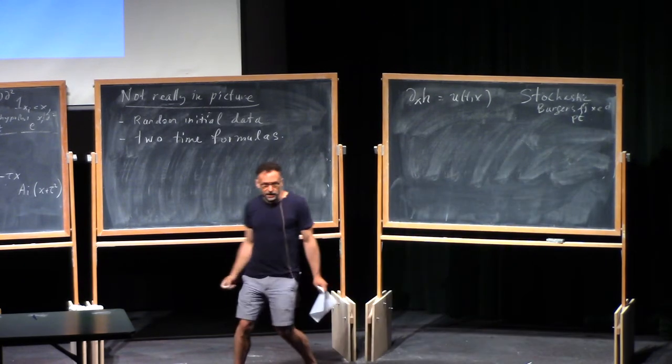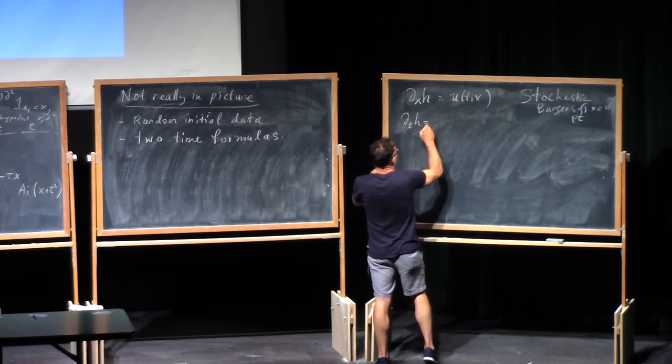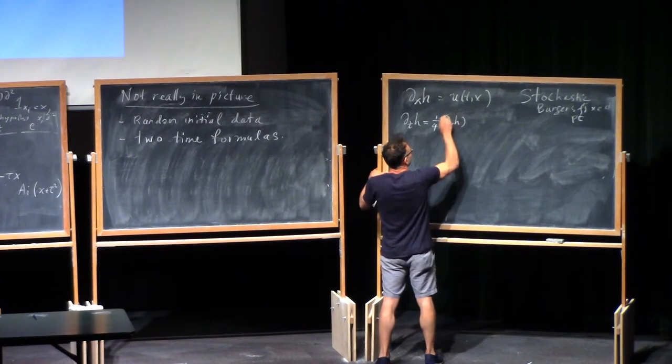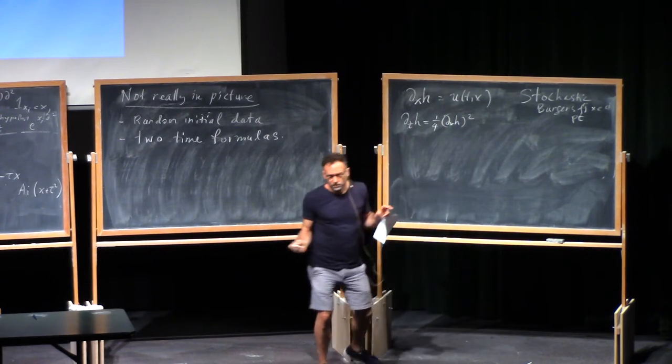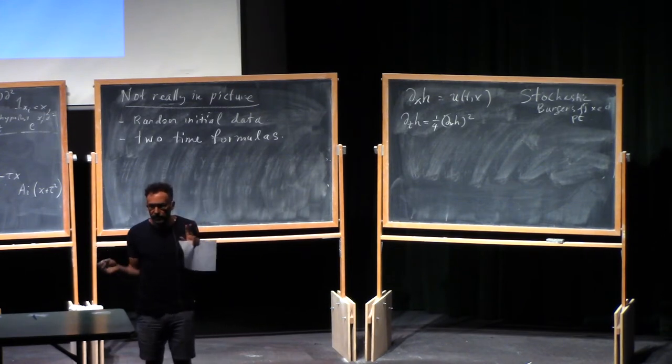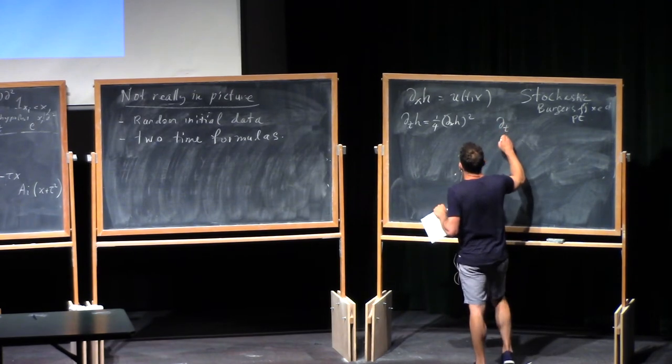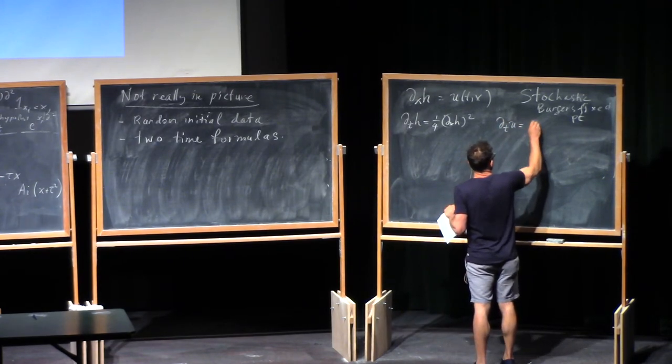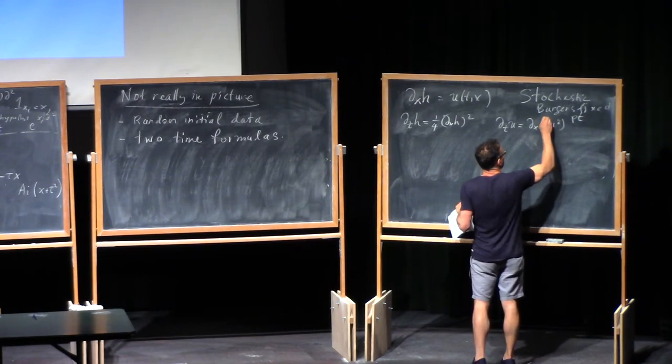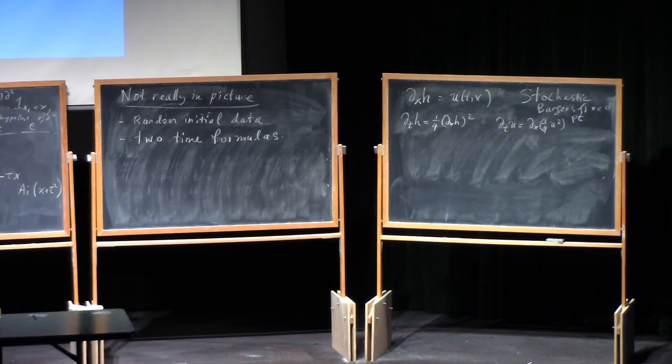And just like H is dying to be the solution of dT H equals... well, it's actually a quarter, but it's not dX H squared. This is sort of the equation for H. You can't prove it. U is supposed to be the solution of dT U equals dX of a quarter U squared. They are some sort of weak solution of that, though. Nobody can prove it.